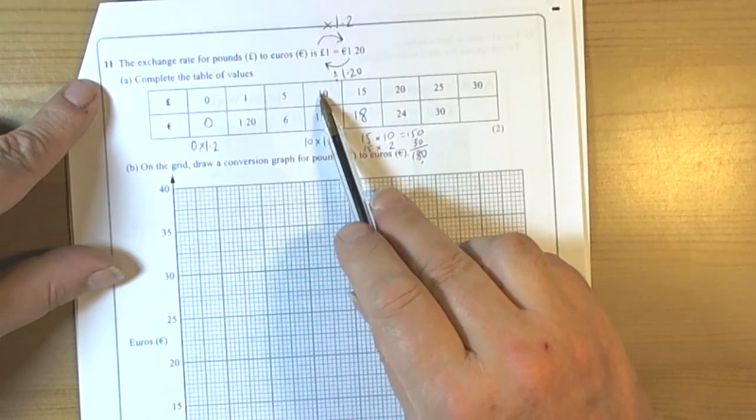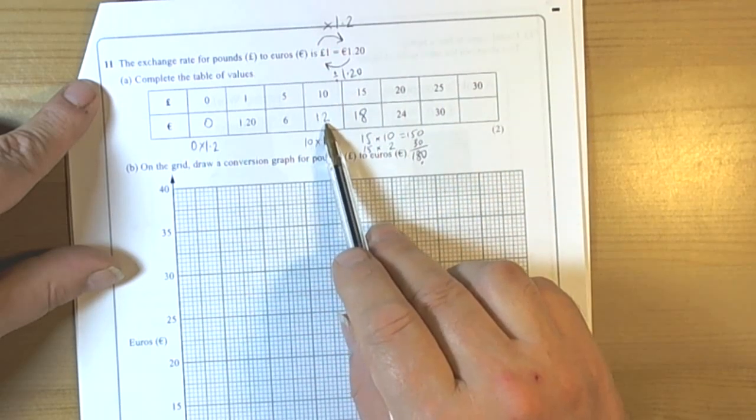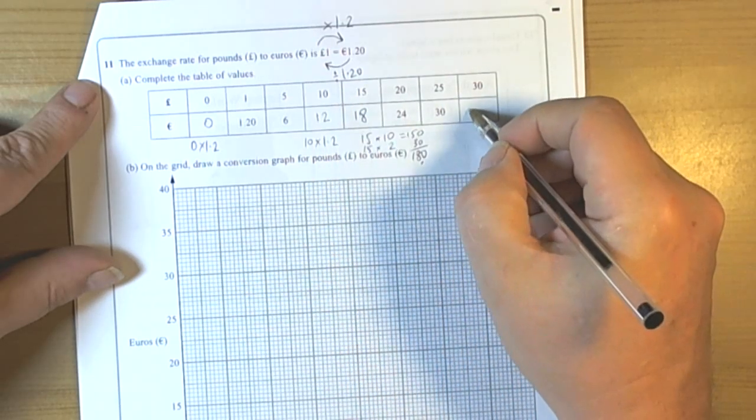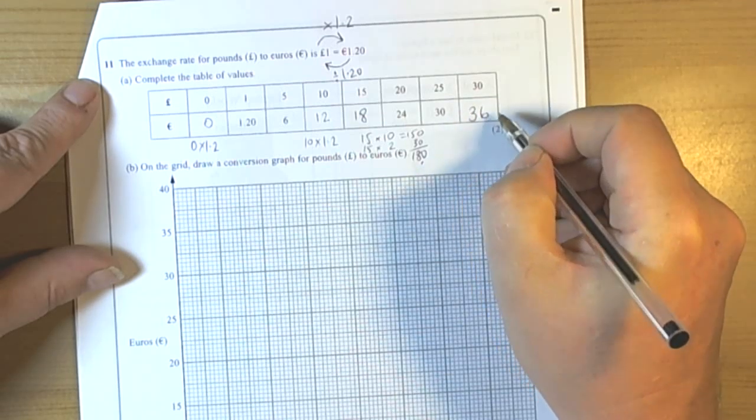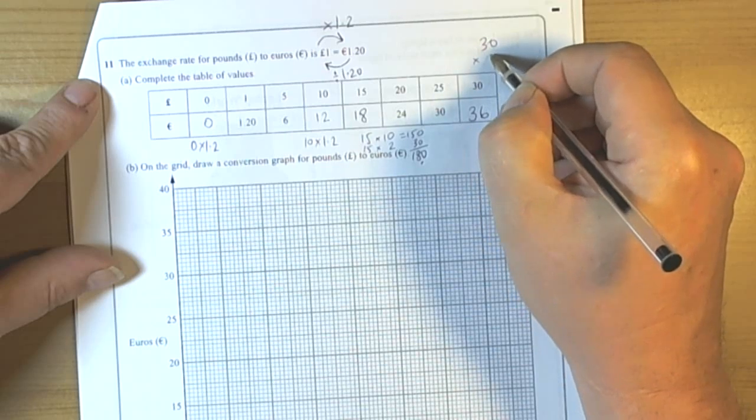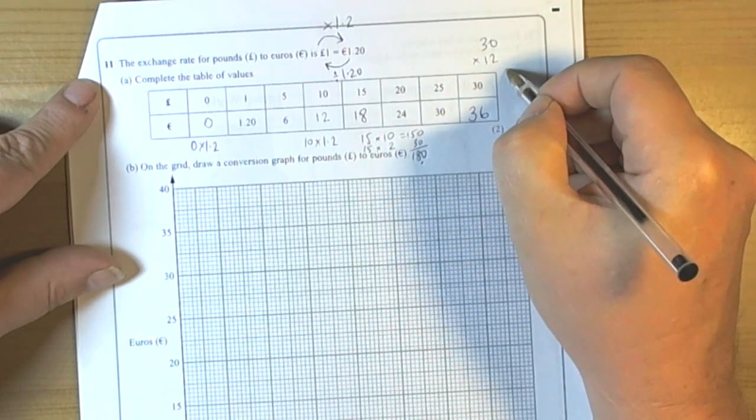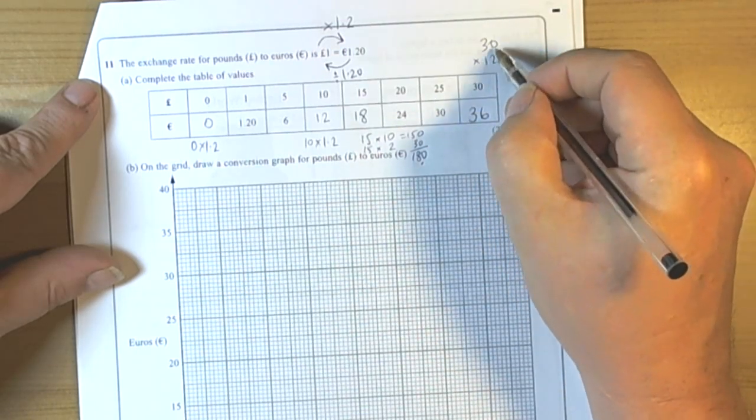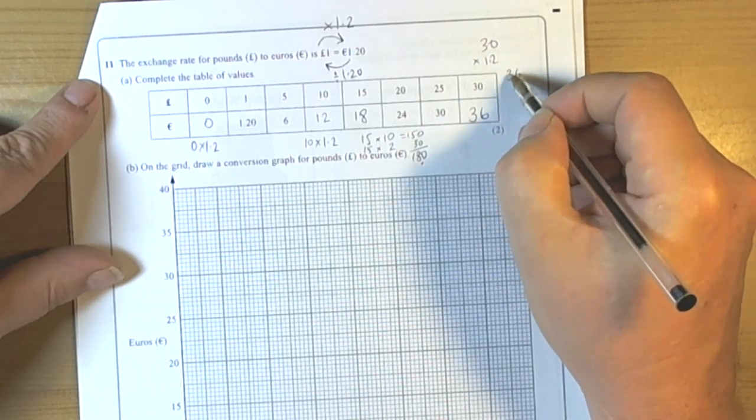And we can see a pattern going on here. This one's going up in fives, this one's going up in sixes. So we suspect this will be 36, and we could check it. 30 times 12, well 3 twelves are 36. So we recognize that if we do 30 times 1.2 it would be 36.